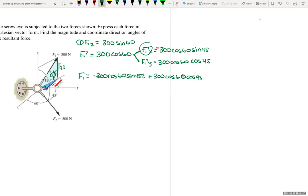You have to start with F1 X, 100 sine 60 K. And when we put this in our calculator, we get that F1 is negative 106.07 I plus 106.07 J plus 259.81 K Newtons.